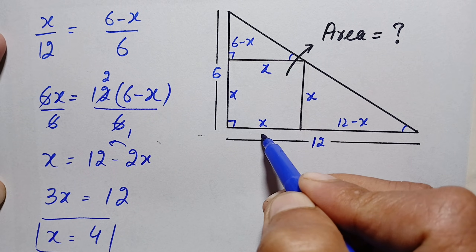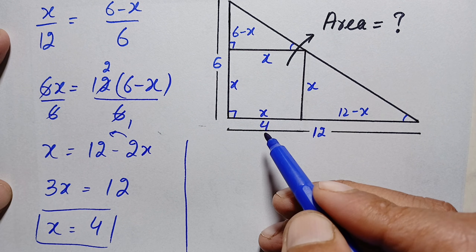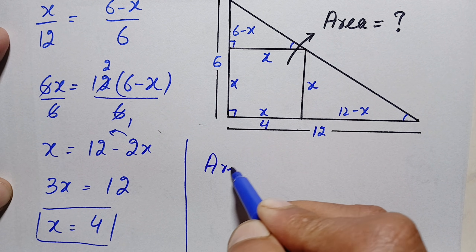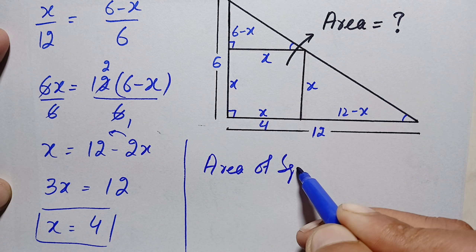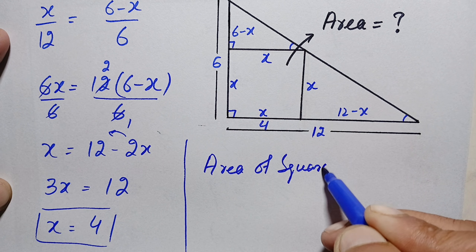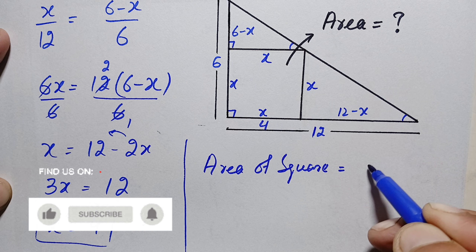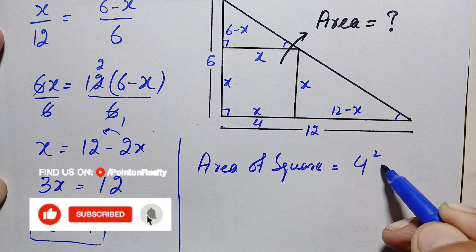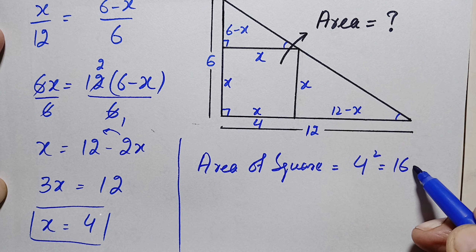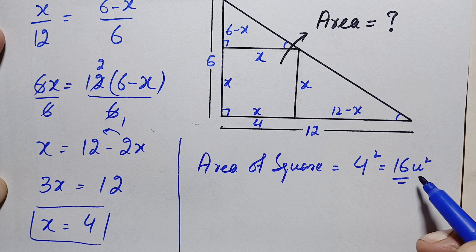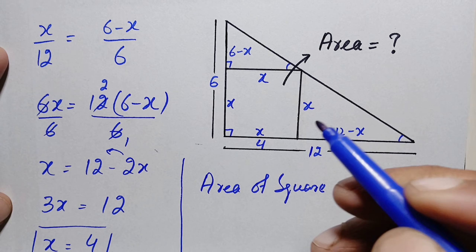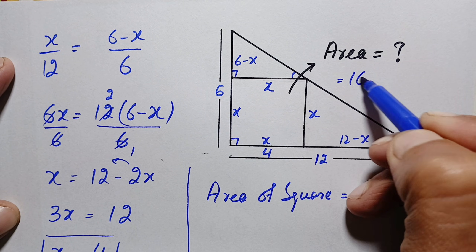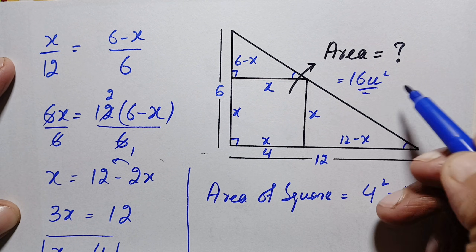Therefore the length of each side of this square is 4 units. The area of this square equals side squared, so 4 squared equals 16. Therefore the area of this square is 16 square units, and that is our final answer.